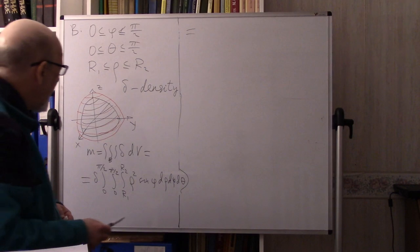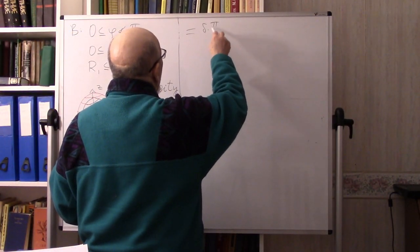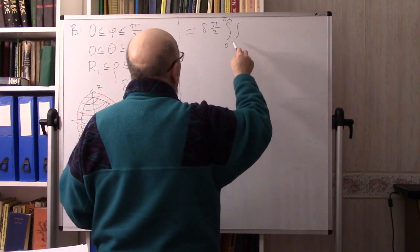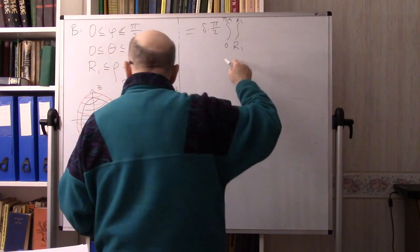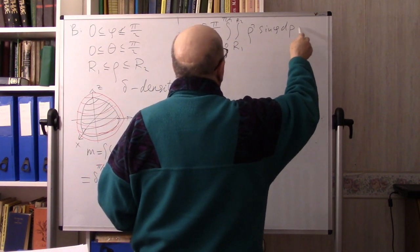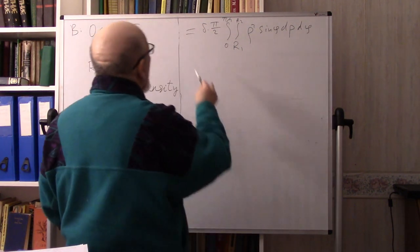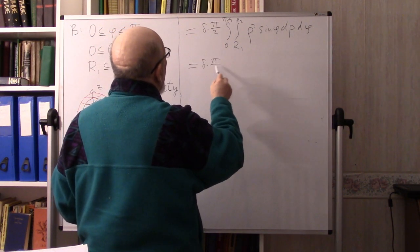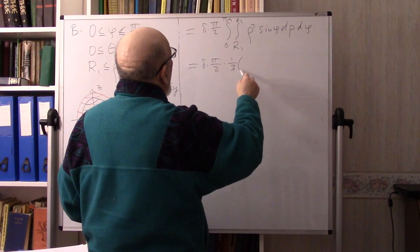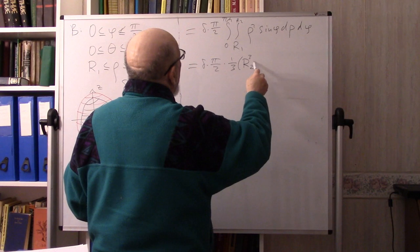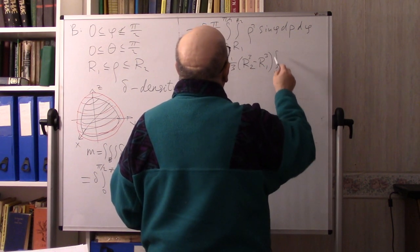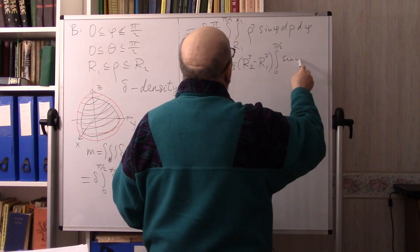So we get δ(π/2) times the integral from 0 to π/2 of sin φ, times the integral from R₁ to R₂ of ρ² dρ dφ. Integrating with respect to ρ gives (1/3)(R₂³ − R₁³). Then the integral from 0 to π/2 of sin φ dφ is 1. So the mass equals (π/6)δ(R₂³ − R₁³).